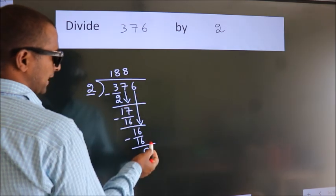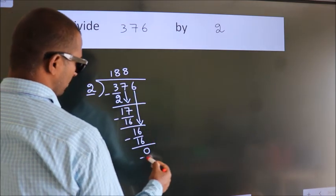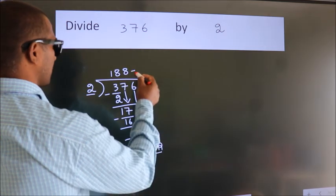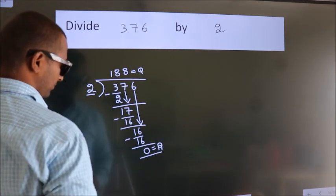No more numbers to bring it down. So we stop here. This is our remainder. This is our quotient: 188.